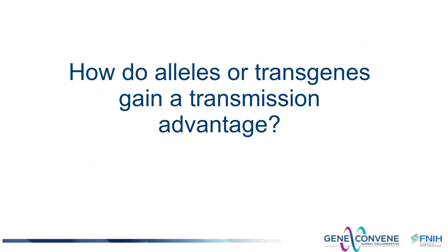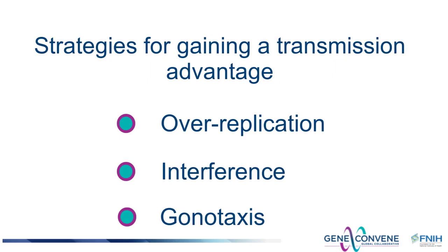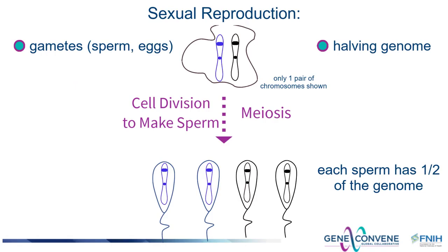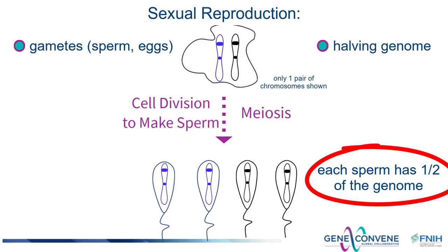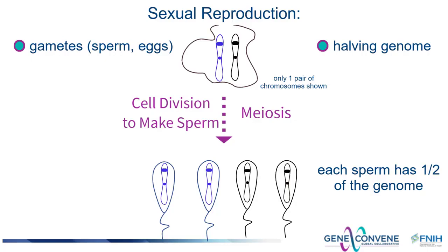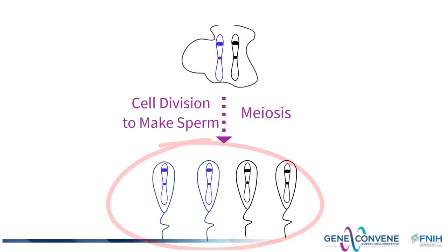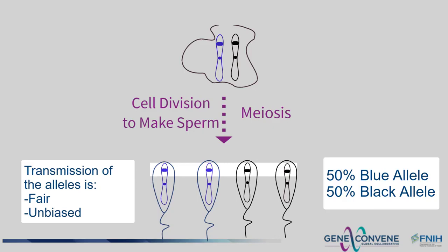How might an allele or transgene gain a transmission advantage? There are three major strategies; we will consider the two most common: over-replication and interference. Recall that sexual reproduction depends on the formation of gametes — sperm and eggs — that each contain half the genetic complement of the organism from which they came. The halving process occurs during a special cell division that leads to four gametes, in this case sperm. The black allele in this case has no transmission advantage and has the same chance of ending up in a sperm cell as the blue allele.